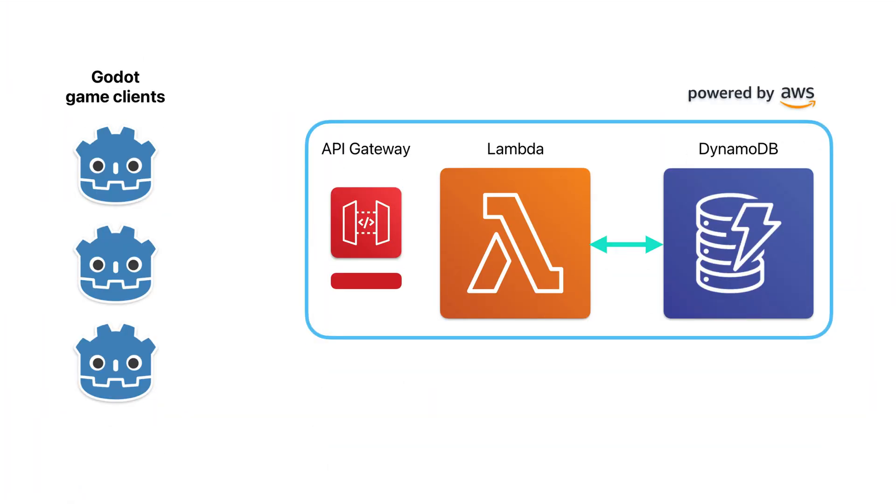When a player clicks the Find Matches button, it establishes a WebSocket connection between the Godot client and the WebSocket server on the Lambda side, and it will send back the list of matches based on the user's preferences. In this case I'm just doing everybody can join any match, but you could program in options like a specific match type, team makeup like 3v3, 2v2, 1v1, or game type preferences like capture the flag, free for all, or deathmatch.